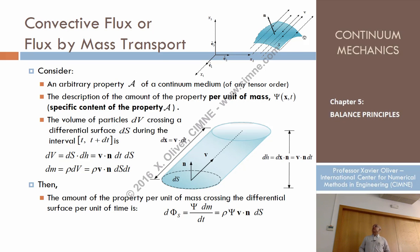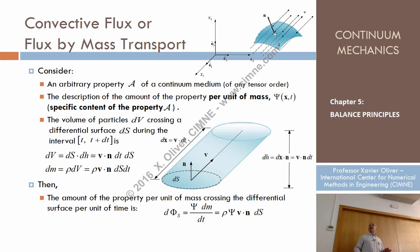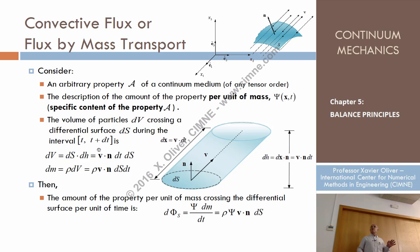Now consider a surface and define a normal. If the surface is open, we must specify the sense of the normal, since it could go in either direction. Choose a sense and compute the convective flux of this property across the surface in the direction of normal N. Start by considering a differential surface element dS at a certain point, with normal N, over a time interval from t to t plus delta t.